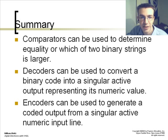In summary of this chapter, code converters, multiplexers, and demultiplexers, we can say that comparators can be used to determine equality or which of two binary strings is larger. Decoders can be used to convert a binary code into a singular active output representing its numeric value. Encoders can be used to generate a coded output from a singular active numeric input line.